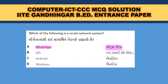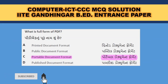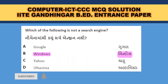Which of the following is a social network system? WhatsApp. iOS and Android are operating systems, and Windows is also an operating system. Full form of PDF — Portable Document Format. Which of the following is not a search engine? Google, Yahoo, and AltaVista are search engines — Windows is an operating system, so B — Windows — is the correct answer.